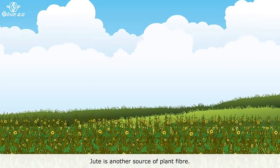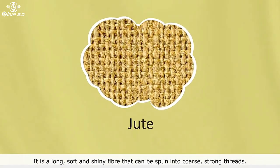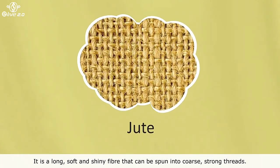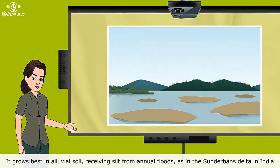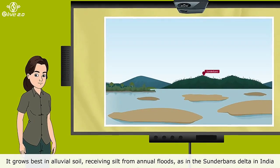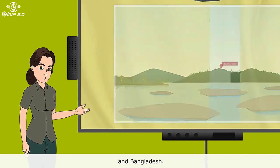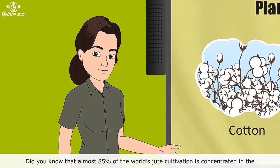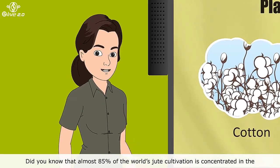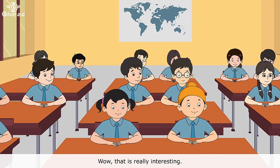Jute is another source of plant fibre. It is a long, soft and shiny fibre that can be spun into coarse, strong threads. Jute is made from the stem of jute plants. It grows best in alluvial soil, receiving silt from annual floods, as in the Sundarbans delta in India and Bangladesh. Did you know that almost 85% of the world's jute cultivation is concentrated in the Sundarbans delta in India and Bangladesh? Wow, that is really interesting.